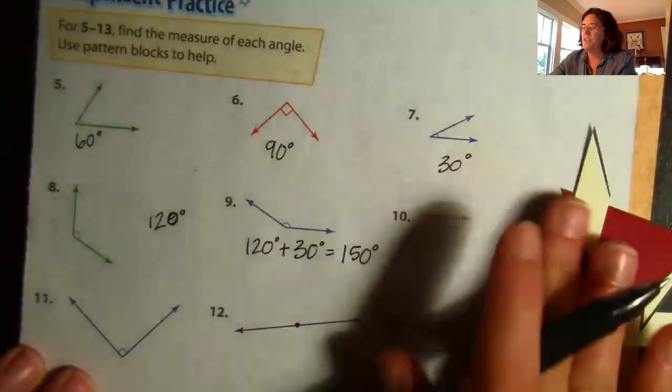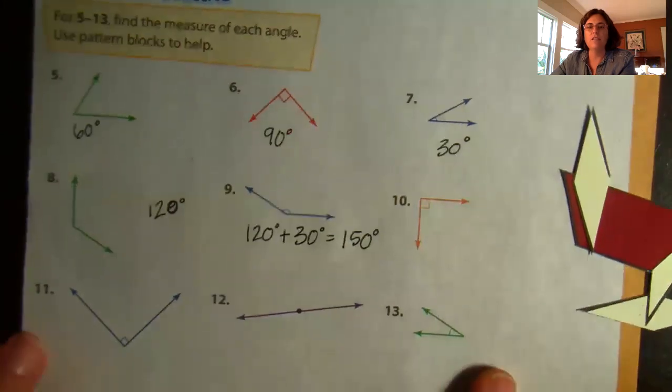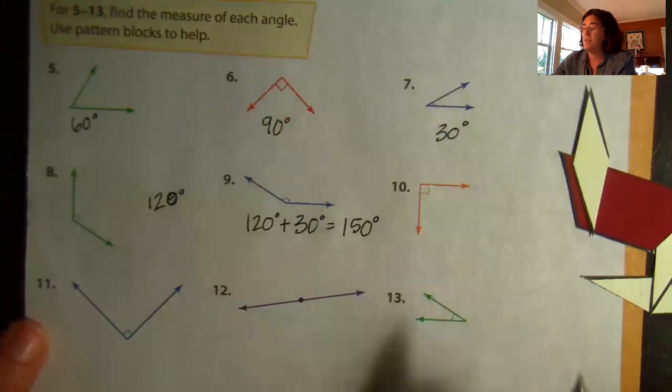All right, we've already done one of these with the boxes, and you guys know what to do with that. Whenever we see a box like that, it means it is a right angle and it is worth 90 degrees.